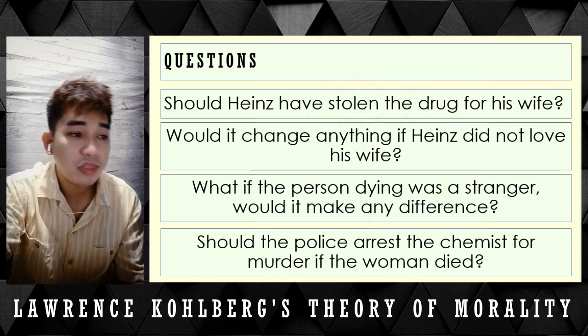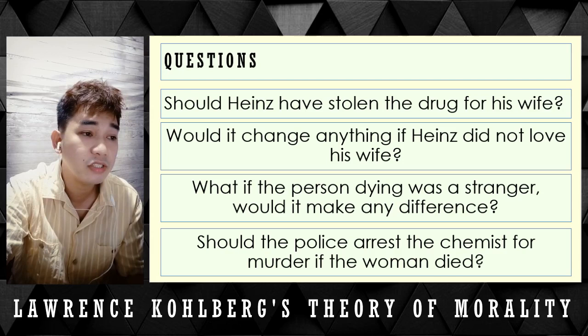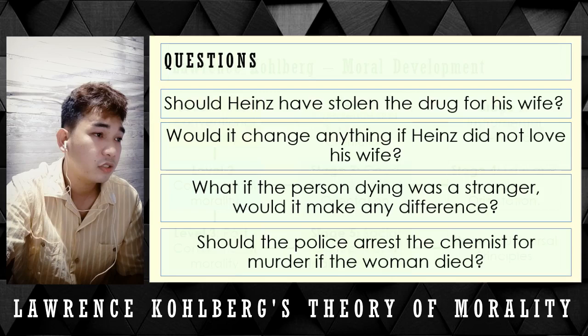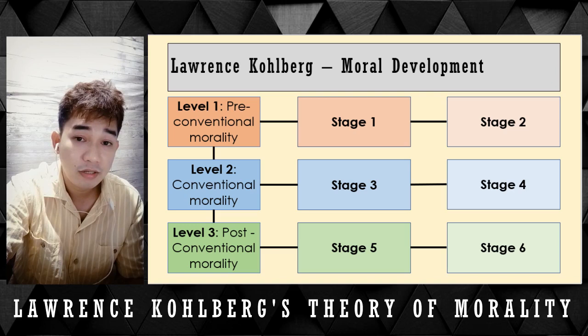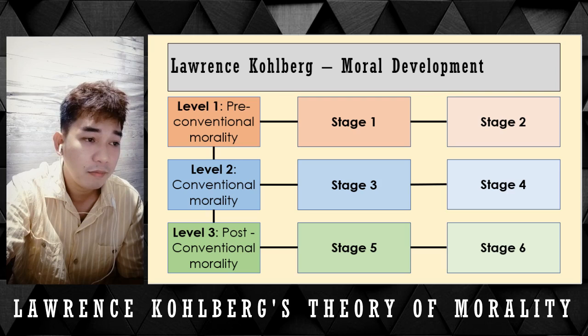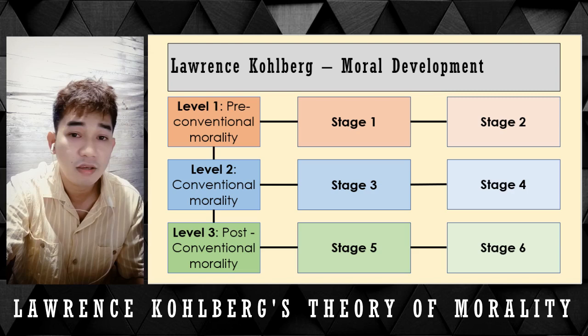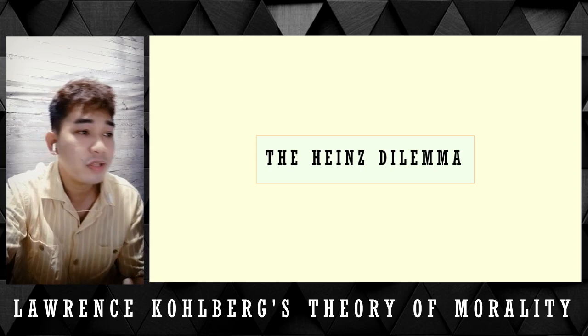Kohlberg identified 3 distinct levels of moral reasoning: pre-conventional, conventional, and post-conventional. Each level has 2 stages. Level 1, pre-conventional morality, has Stage 1 and Stage 2. Level 2, conventional morality, has Stage 3 and Stage 4. Level 3, post-conventional morality, has Stage 5 and Stage 6.